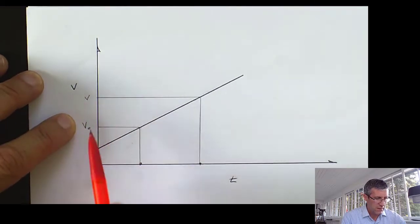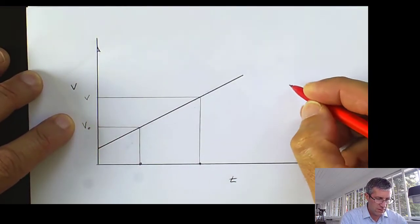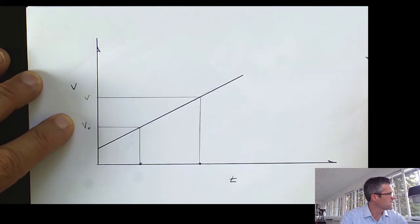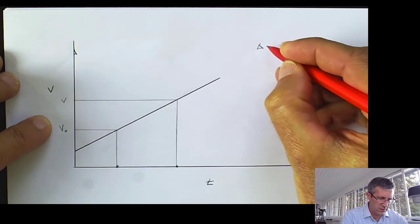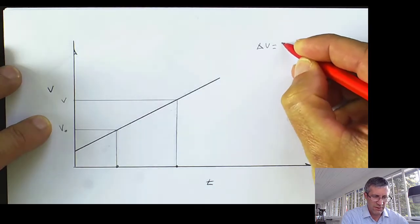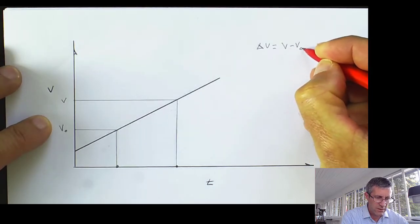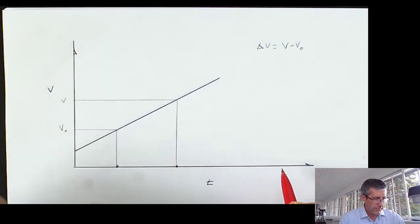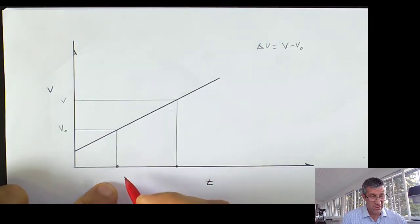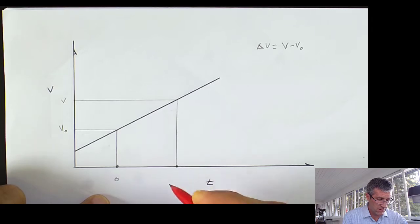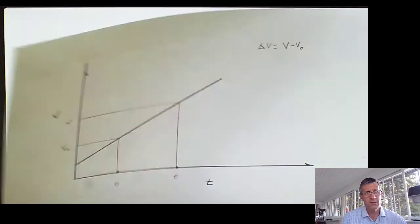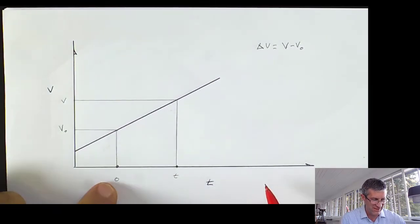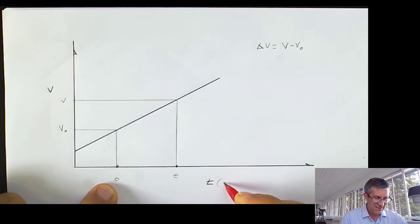So what is my change in velocity? My change in velocity is going to be my final velocity minus my initial velocity. Time? Well, we're always going to assume time starts at zero and goes to time point T. It just makes life easier.